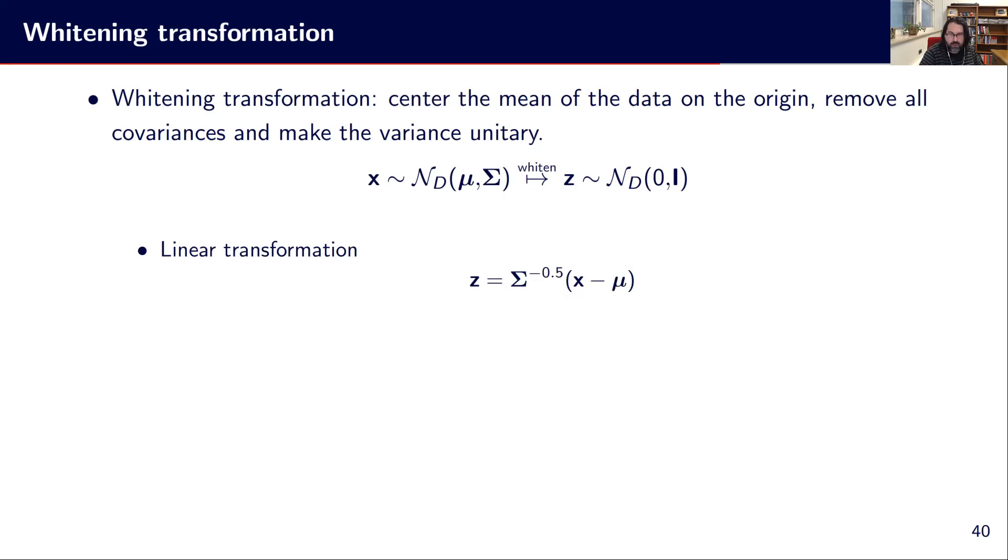To achieve this, we are looking for some linear transformation. We'll say that z is equal to Σ^(-0.5), which I will come back to later, times (x - μ). So -μ is really centering on the origin, and then this Σ^(-0.5) is supposed to remove everything in terms of the variance to get us an unitary variance setting.